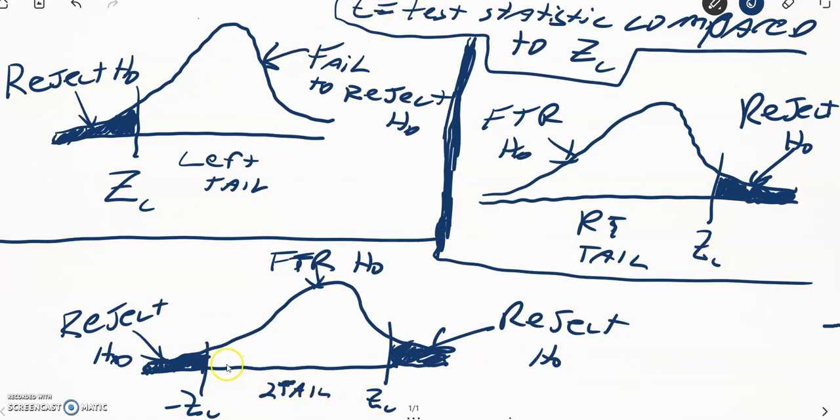If that test statistic t falls anywhere in between that left negative number and that right positive number, then we fail to reject the null hypothesis.